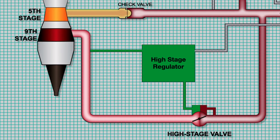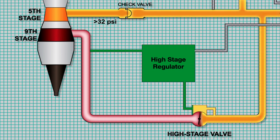As engine speed increases, 5th stage pressure will increase. When the 5th stage pressure reaches 32 PSI, it will overcome the check valve and flow into the duct. This will cause duct pressure to increase beyond the 9th stage regulated pressure of 32 PSI, causing the HSV to close. The bleed air system is now operating using 5th stage air. The check valve prevents reverse flow into the 5th stage when duct pressure is higher than 5th stage pressure.